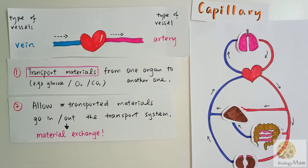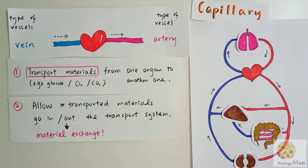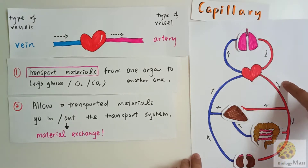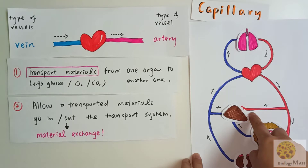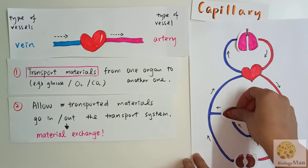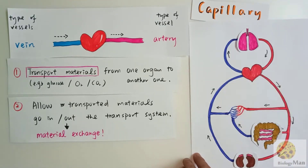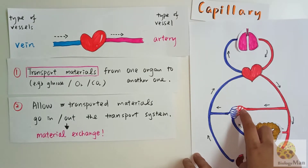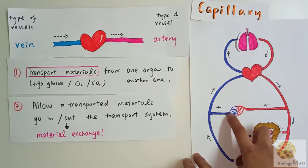Here is the general plan of the human circulatory system. You cannot see any capillary here. It is because the artery sends the blood to different organs — in this case, the liver — and then it will branch up to form so many capillaries. The capillaries later on will join together to form the vein, which then sends the blood back to the heart.